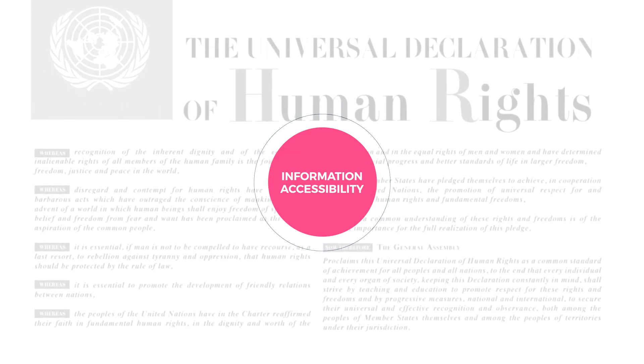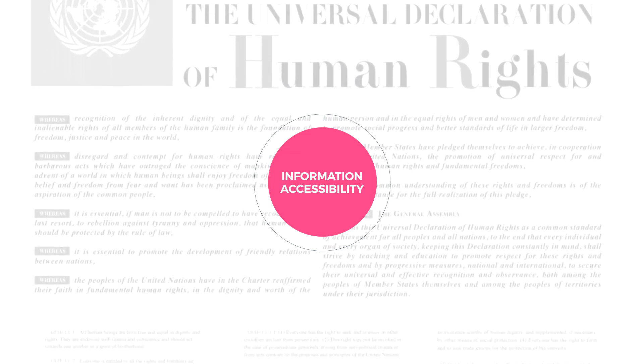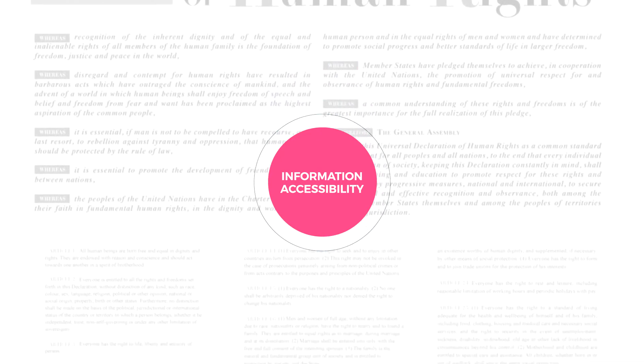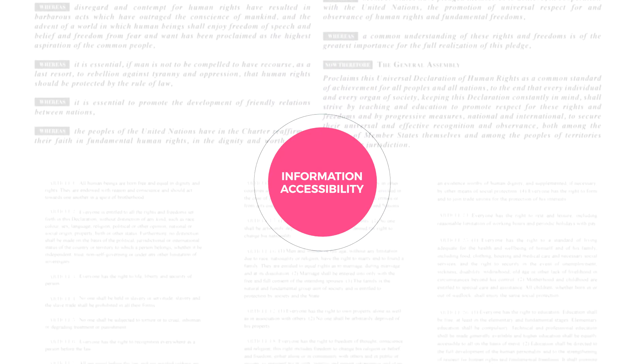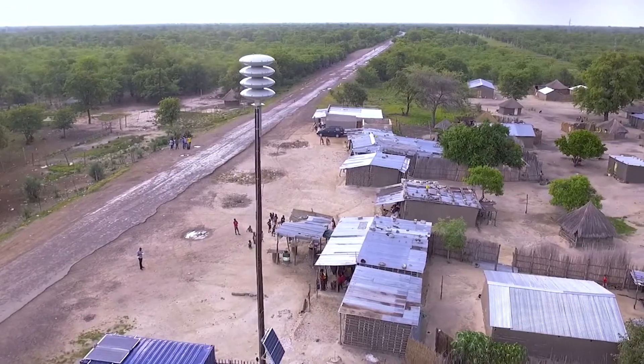Access to information is above all a universal right, as recognized by the Universal Declaration of Human Rights and the Convention on the Rights of Persons with Disabilities. All individuals have the right to create, access, and use all the information and knowledge they need through any media and regardless of frontiers.